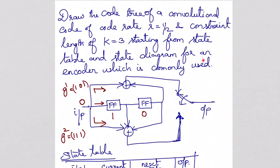From the state table and state diagram, draw the code tree for the encoder which is commonly used. Is it clear? Thank you.